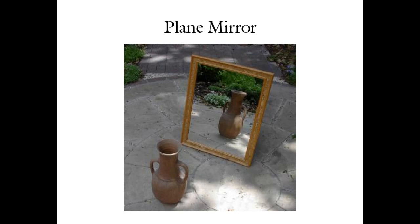Under conditions of nice specular reflection, an image can form. If we were an object sitting on the ground looking at ourselves in the mirror, we would see an image of ourself that moves when we move. What's interesting about the image is that it appears our twin is on the other side of the surface — what we're seeing is an optical effect created by where rays of light reflecting off the surface appear to converge in space.